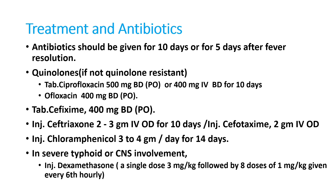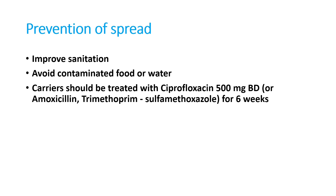Either we can go for carbapenems as a backup or return to chloramphenicol, as chloramphenicol-sensitive organisms are now being seen in many blood cultures. If the patient has CNS involvement, we must use dexamethasone. While steroids are sometimes used for temporary relief, in enteric fever they carry a high risk of intestinal perforation, so they should generally be avoided. However, for CNS involvement, dexamethasone - which crosses the blood-brain barrier - must be given: 3 mg/kg initially, followed by eight doses of 1 mg/kg every six hours.